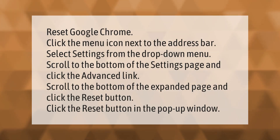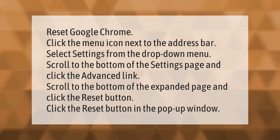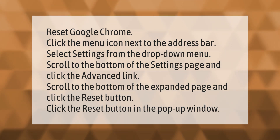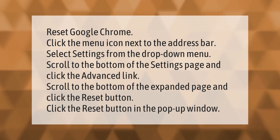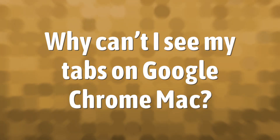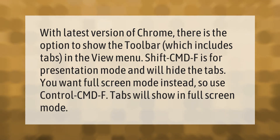To reset Google Chrome, click the menu icon next to the address bar and select 'Settings' from the drop-down menu. Scroll to the bottom of the settings page and click the 'Advanced' link. Scroll to the bottom of the expanded page and click the 'Reset' button, then click 'Reset' again in the pop-up window.